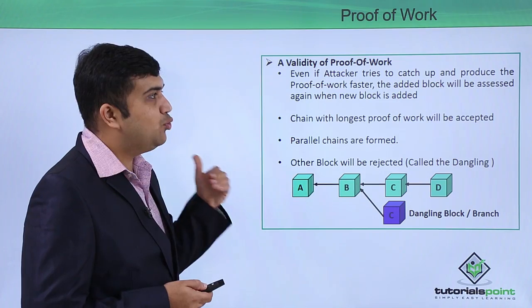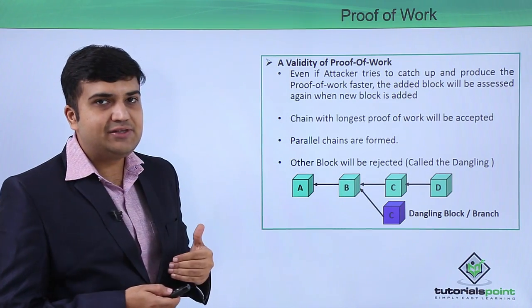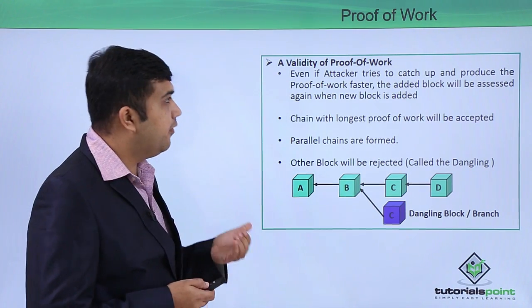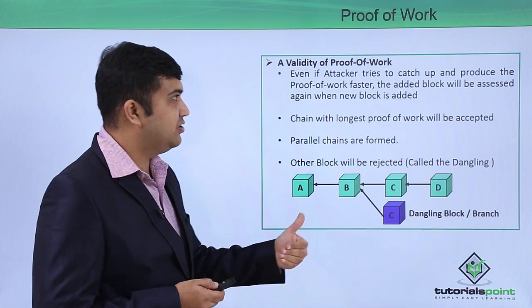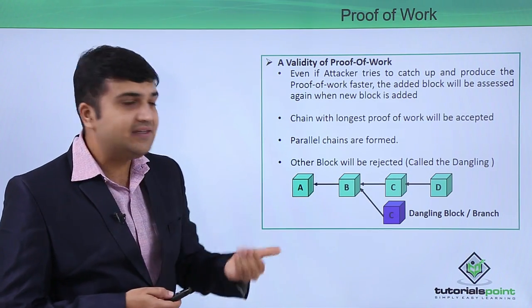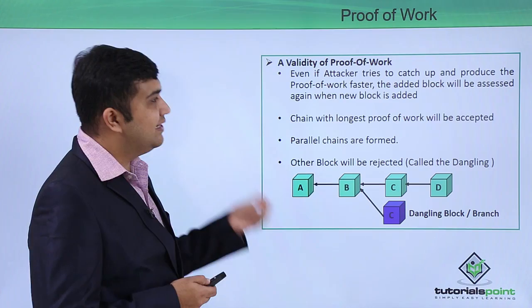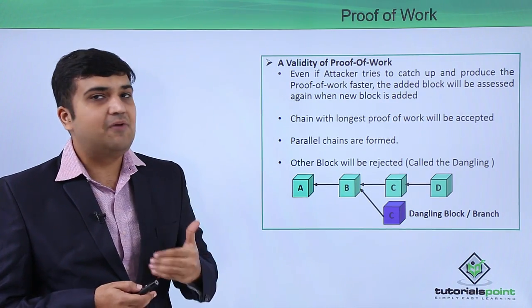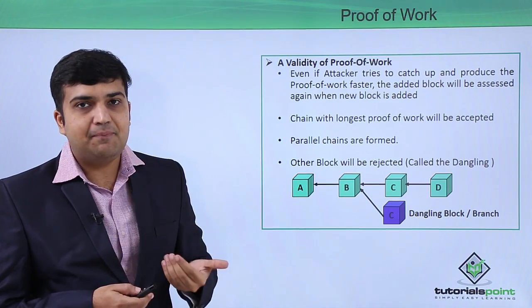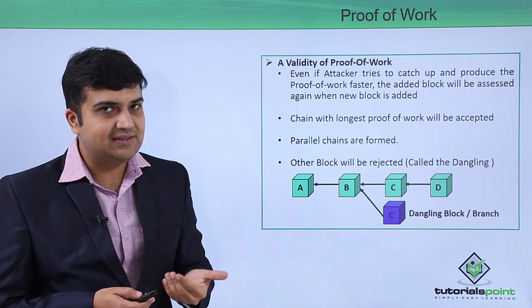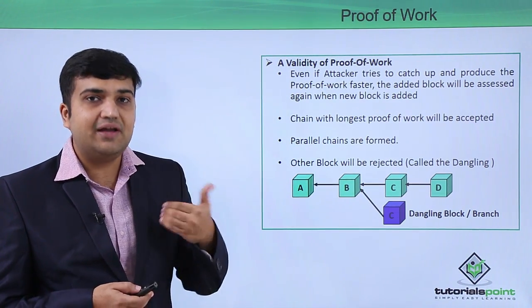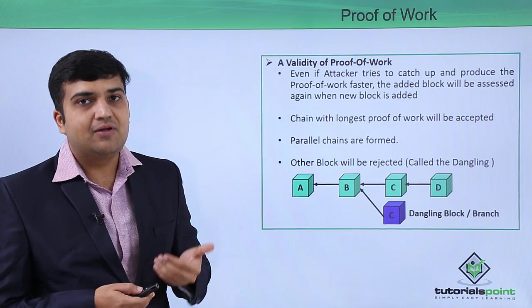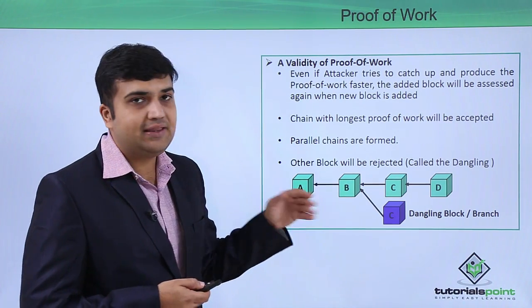Even if the attacker tries to catch up with this and produce the proof of work for the entire blockchain and act much faster, the block will be first assessed and then added. If it is found that the block is not valid, then that block will be sent for consensus, and if the consensus is not agreed upon, that block will not be considered in the main copy.